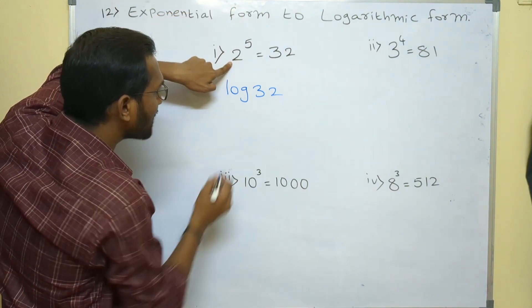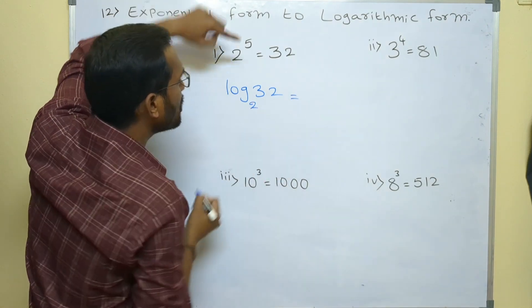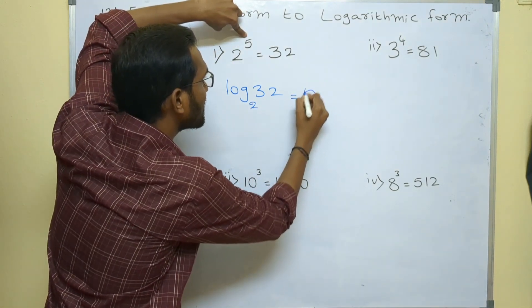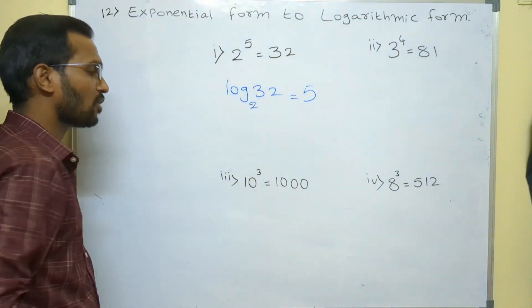Write this base as it is as the base only, equals to write this power as the answer. Log 32 base 2 equals 5.